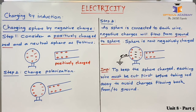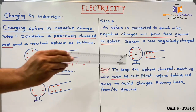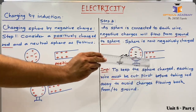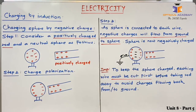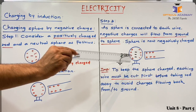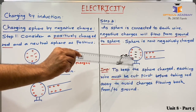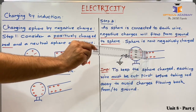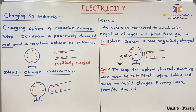To summarize charging by induction: we use earthing wires so that excess charges either flow to the ground or flow from the ground into the sphere. There is no physical contact between the charged object and the uncharged object throughout the process. At the end, the sphere achieves the opposite charge to that of the charged rod. Thank you.